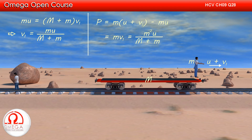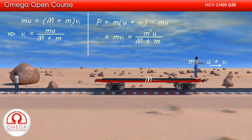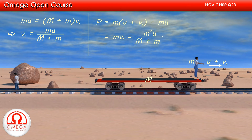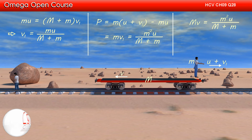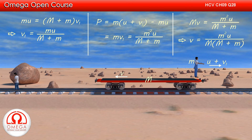Putting the value of v1, the momentum of the two men equals m²u / (M + m) towards right. Since the initial momentum of the entire system was zero, the final momentum of the man plus car system must also be zero. This means the car must have the same momentum in the opposite direction, so the momentum of the car is m²u / (M + m) towards left. The mass of the car is M, and letting its speed after the second man jumped off be v, we get Mv = m²u / (M + m), which implies v = m²u / [M(M + m)]. This is our answer.